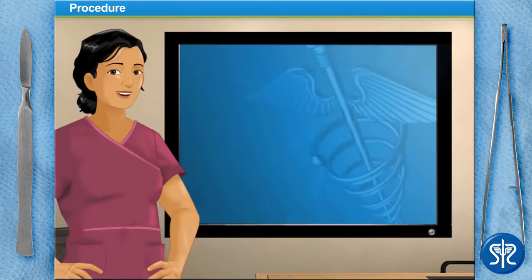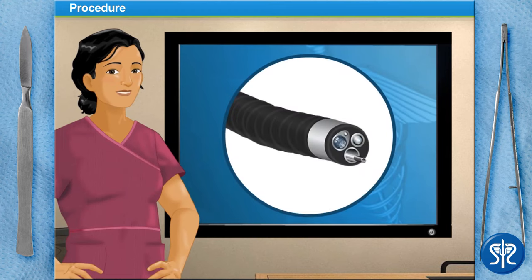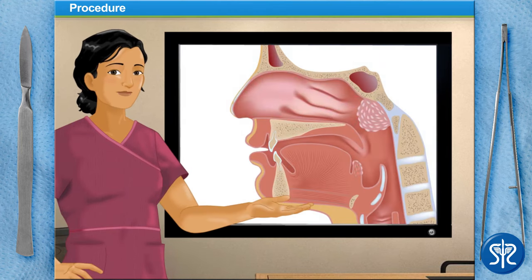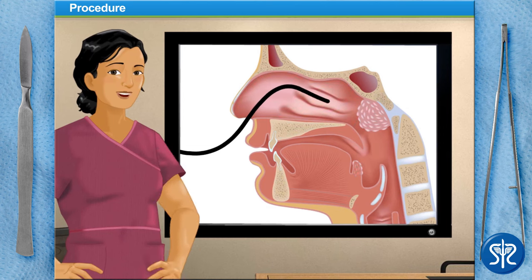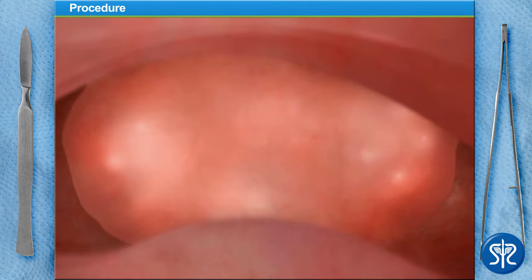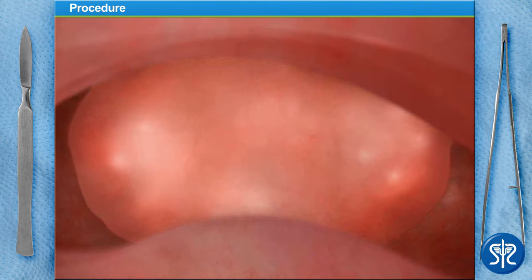We'll begin by putting an endoscope through our patient's nose so that we can view our work on a monitor. When we reach the back of the nose at the entrance to the throat, we'll be able to see the adenoids. Now we can see the adenoids.